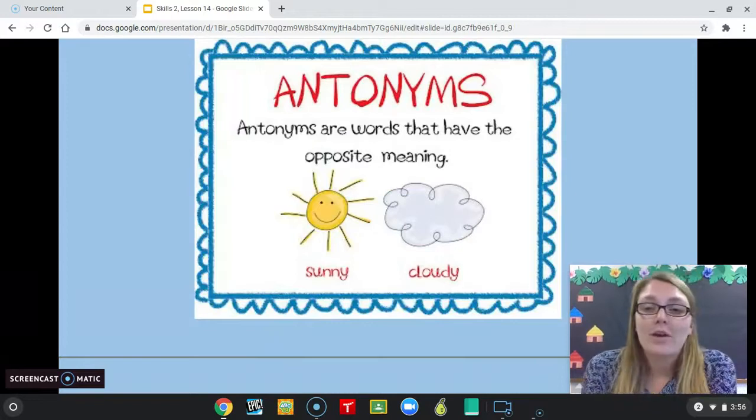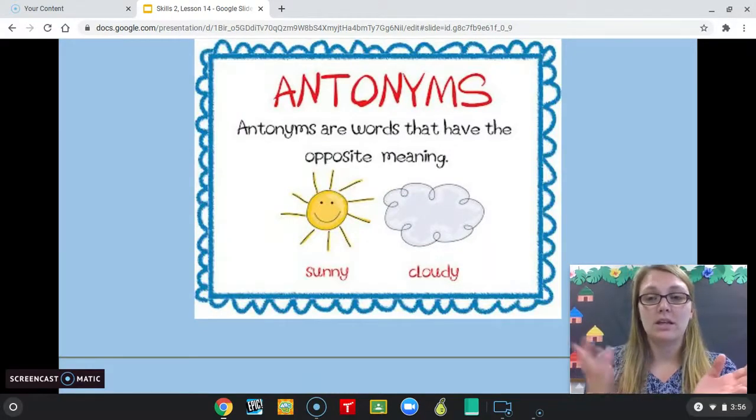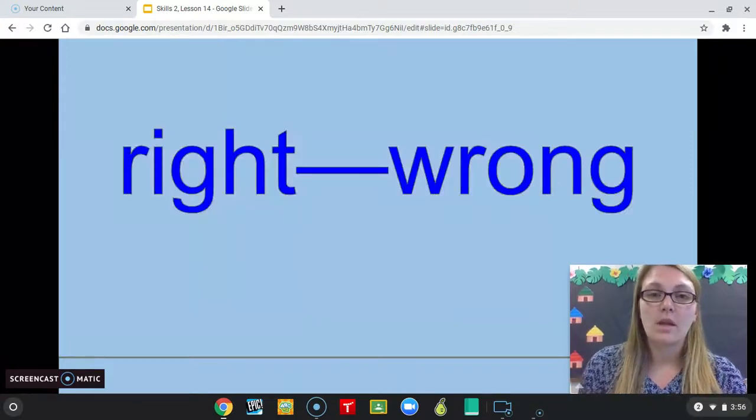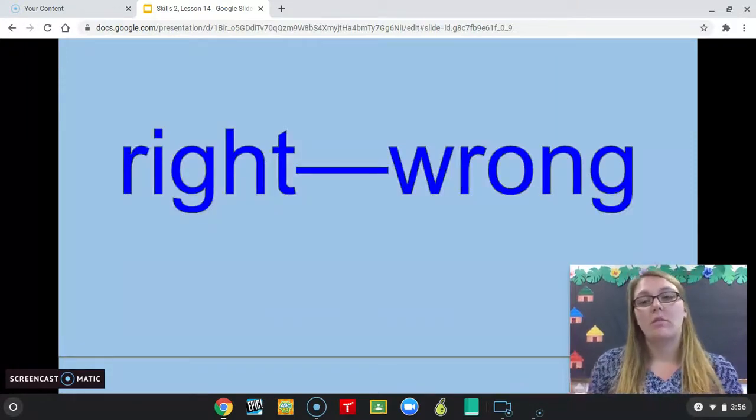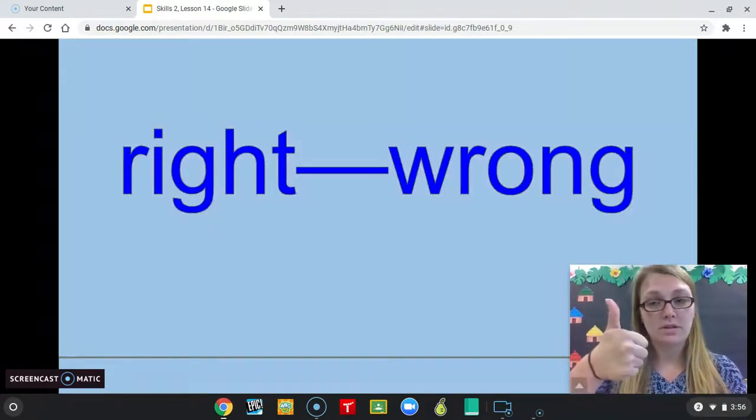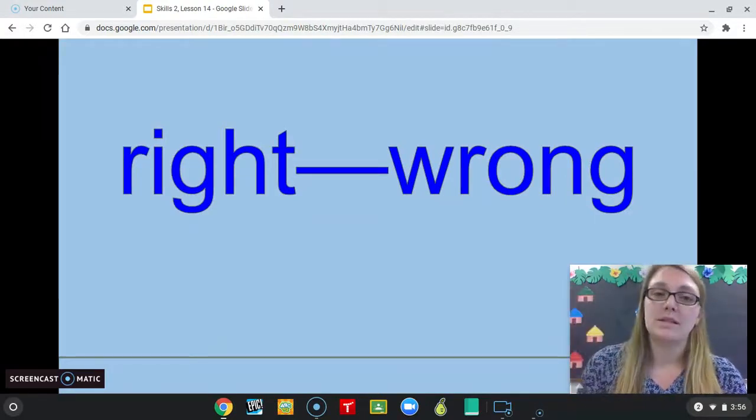Okay, now for antonyms. Those are when words have the opposite meaning, like sunny and cloudy. So, you'll see a set of words on the screen. Thumbs up if it's an antonym pair, thumbs down if they're not opposites.